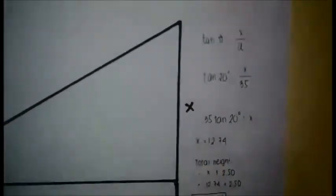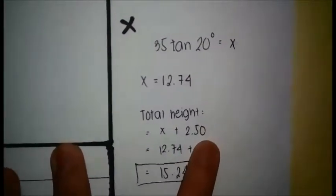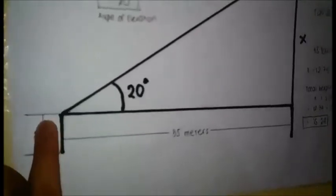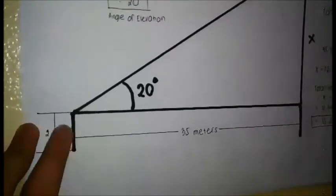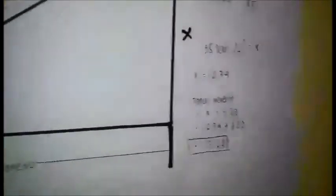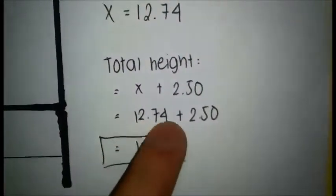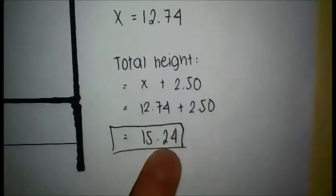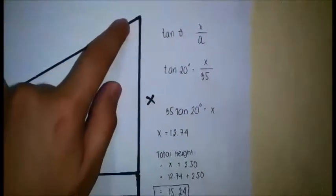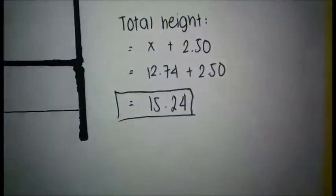But that's not the total height yet. We have to add 2.50. Why? Because in measuring this, we were standing up. From the ground to our eye level, it is 2.50 meters. So the total height is 12.74 plus 2.50, which equals 15.24. So from the ground to the 11 Nobility signboard, it is 15.24 meters high.